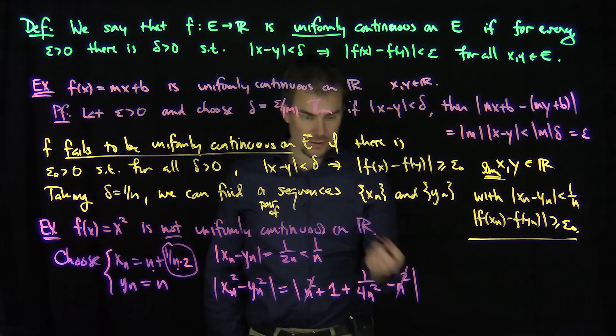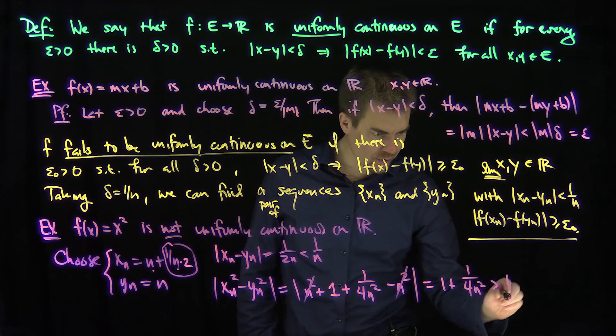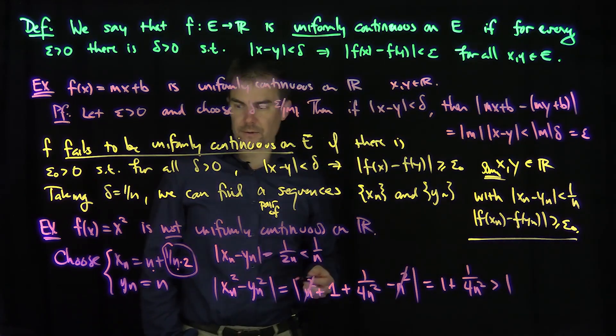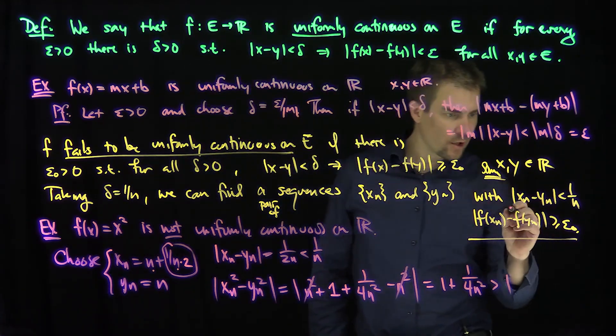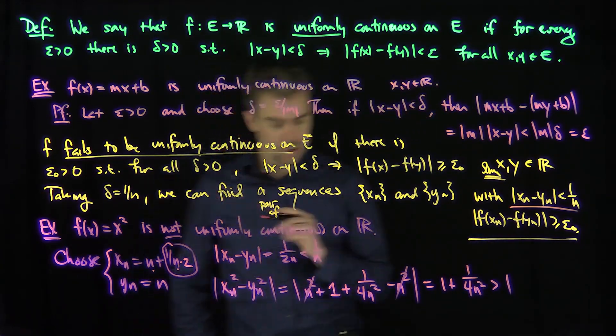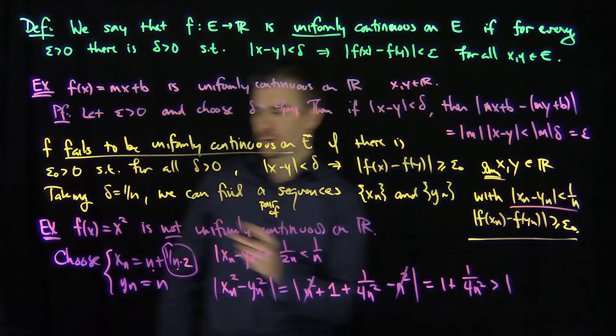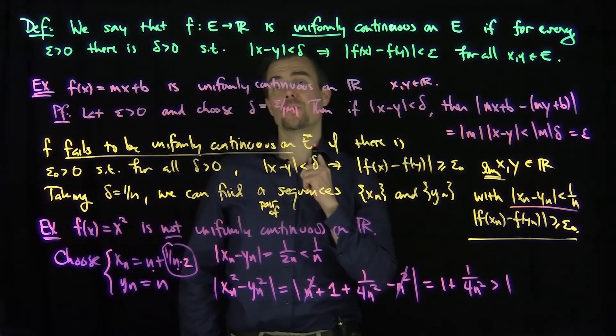And so this thing in absolute value is just 1 plus 1 over 4n squared, which is strictly bigger than 1. So what I've done is I've found a sequence of points x_n and y_n whose difference is less than 1 over n, such that the square of those two sequences is bigger than or equal to some fixed value epsilon naught, which proves that x squared is not uniformly continuous on the real line.